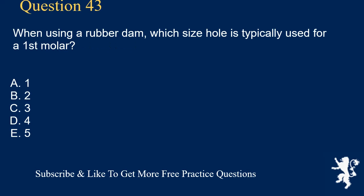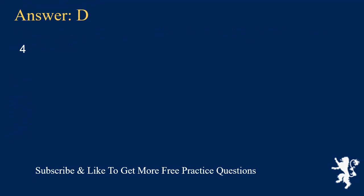Question 43. When using a rubber dam, which size hole is typically used for a first molar? A. 1, B. 2, C. 3, D. 4, E. 5. Answer: D. 4.